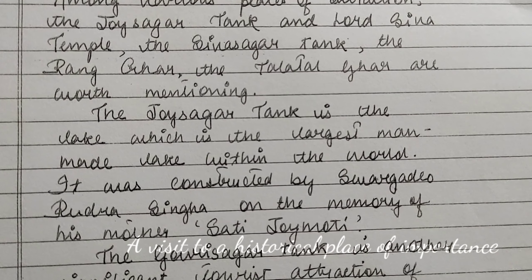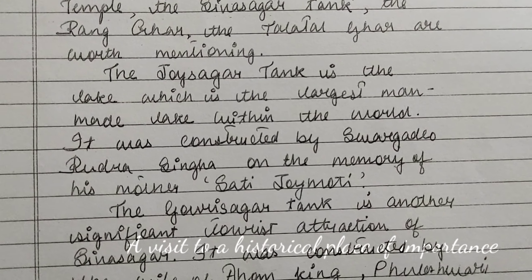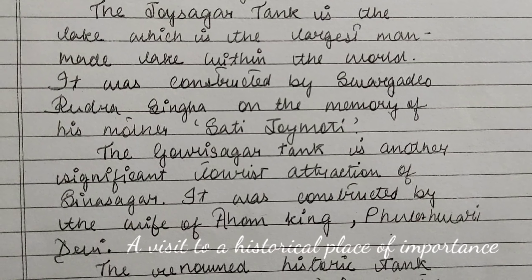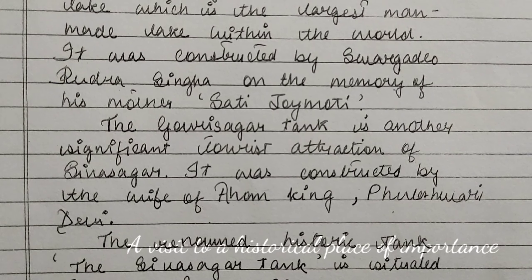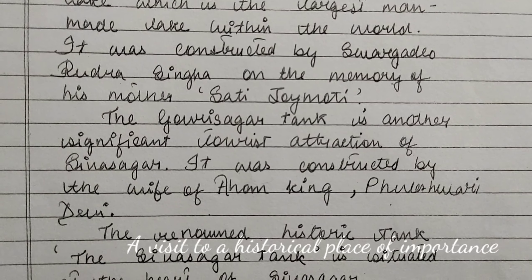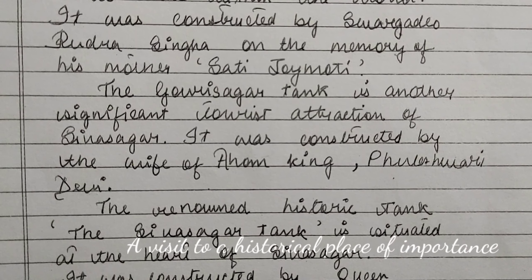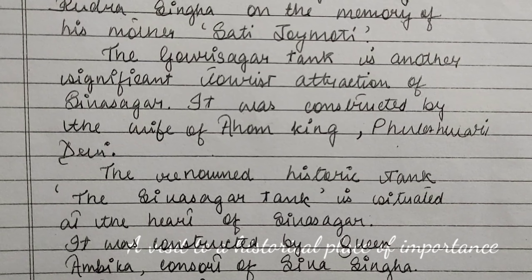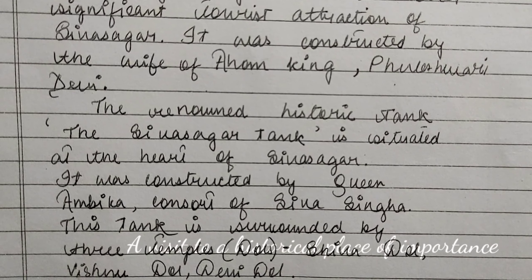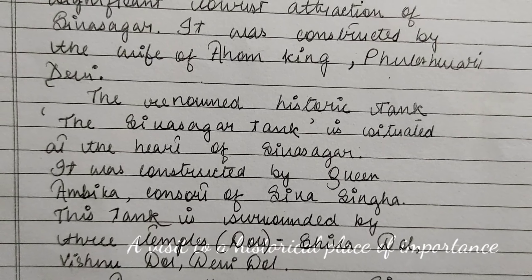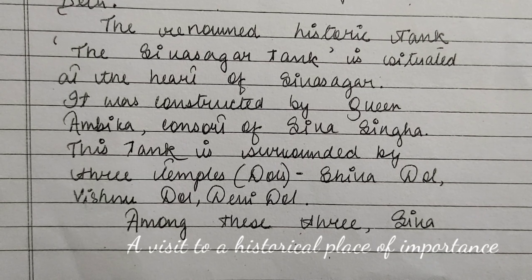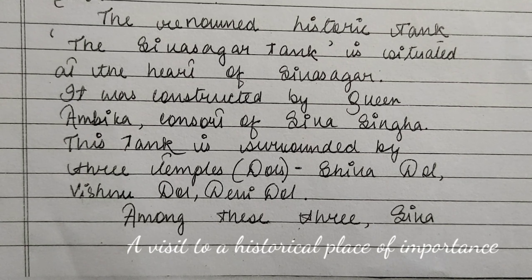Among various places of attraction, the Joysagar Tank, the Lord Shiva temple, the Sivsagar Tank, the Ranghar, and the Talatal Ghar are worth mentioning. The Joysagar Tank is the largest man-made lake in the world — it was constructed by Svargadeva Rudra Singha in memory of his mother Sati Jayamati. The Gaurisagar Tank is another significant tourist attraction of Sivsagar, constructed by the Ahom king. The renowned historic Sivsagar Tank is situated at the heart of Sivsagar.